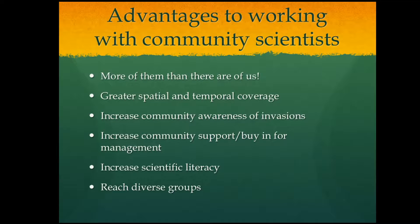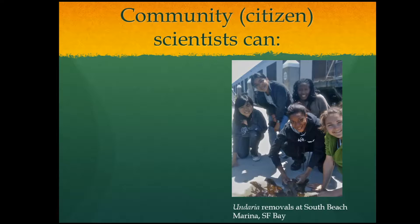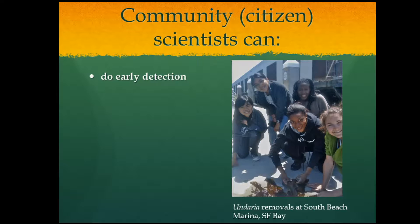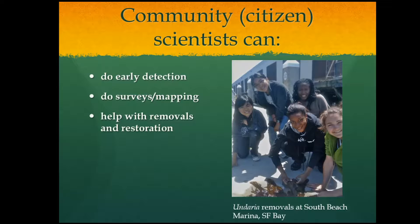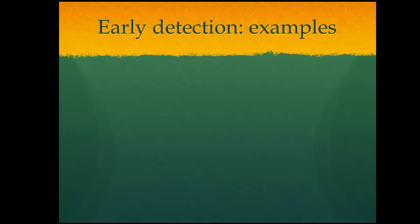I'll talk about community science projects I've been involved in — some in Hawaii where I did my graduate work, some in California, some involving animals, others involving algae — but the general idea applies across different systems. There are several ways citizen science can interface with invasive species issues: early detection, surveying and mapping where invasive species are, helping with removals, and follow-up restoration. I'll talk about projects that do each of these three things, then discuss some considerations involved with community science.